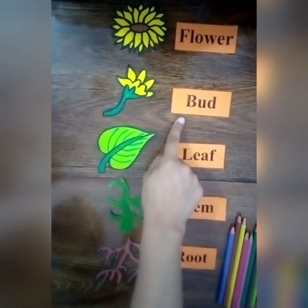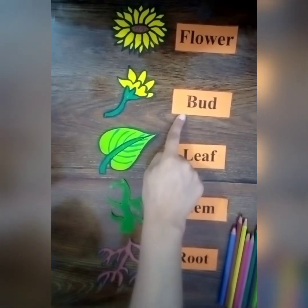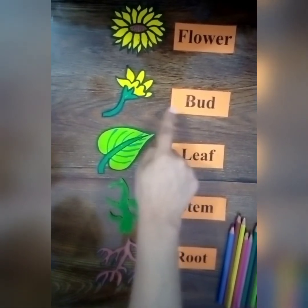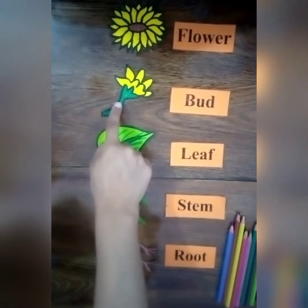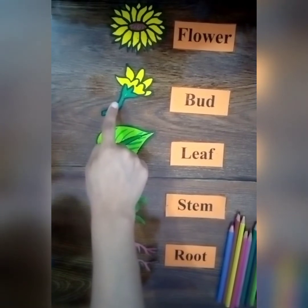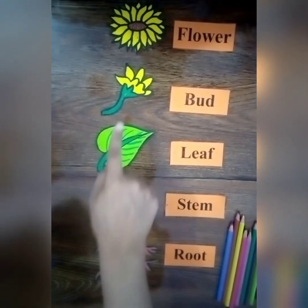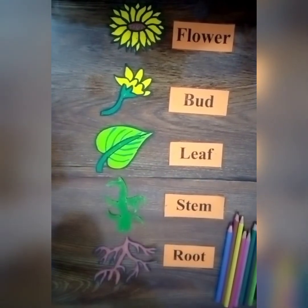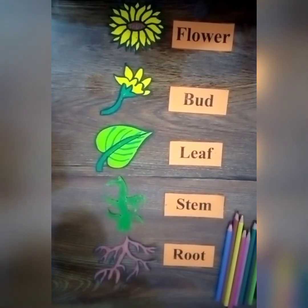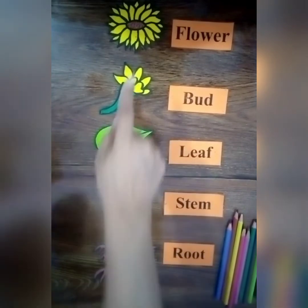Buds are the embryonic plant shoots which may be specialized to develop flowers or short shoots. Buds grow to form flowers.